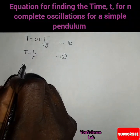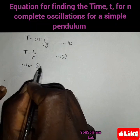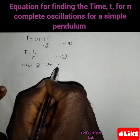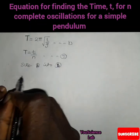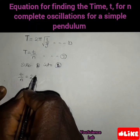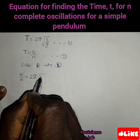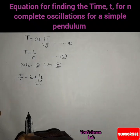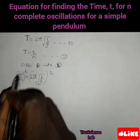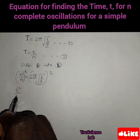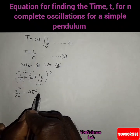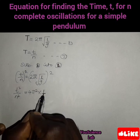Substituting equation 2 into equation 1, we get t divided by n equals 2π times the square root of l divided by g. Then, squaring both sides, we have t squared divided by n squared equals 4π squared times l divided by g.